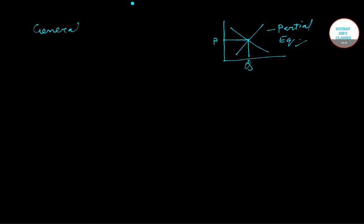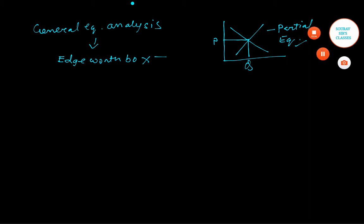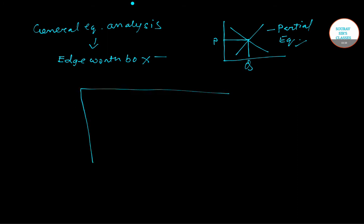When we talk about general equilibrium analysis, we use the Edgeworth Box diagram. It allows the study of the interaction of two individuals trading two different commodities. This type of analysis draws on the use of indifference curve analysis to analyze trading behavior. To illustrate this, we will now draw the Edgeworth Box diagram.